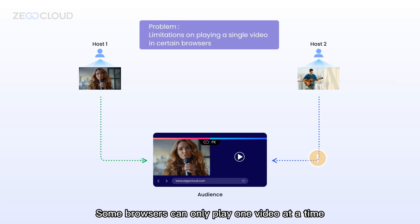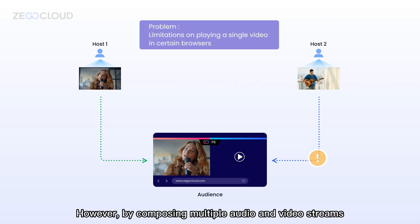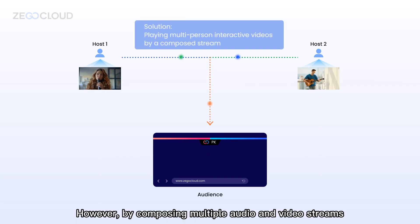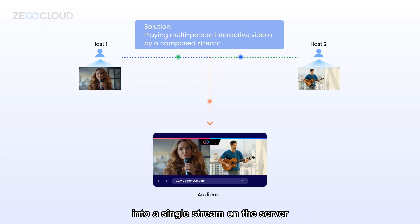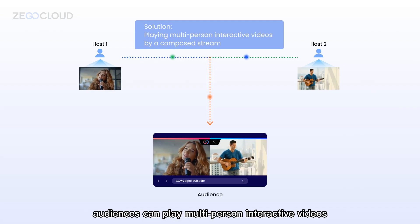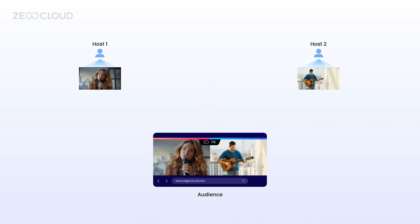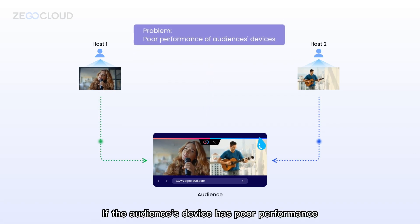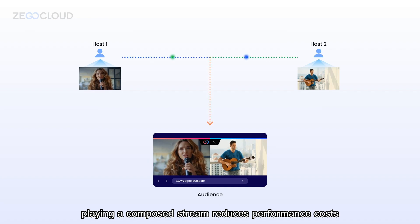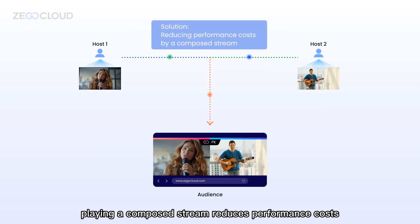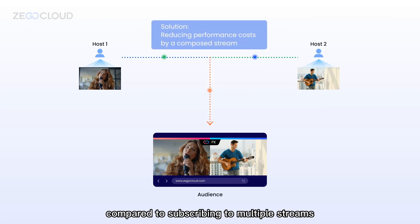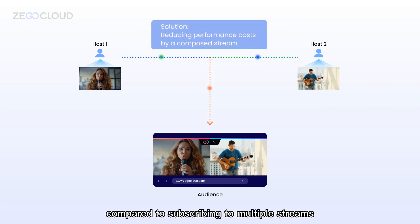Some browsers can only play one video at a time. However, by composing multiple audio and video streams into a single stream on the server, audiences can play multi-person interactive videos on their devices. If the audience's device has poor performance, playing a composed stream reduces performance costs compared to subscribing to multiple streams.